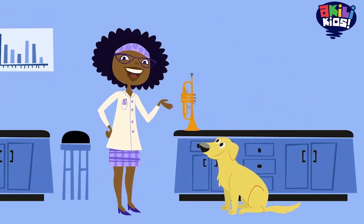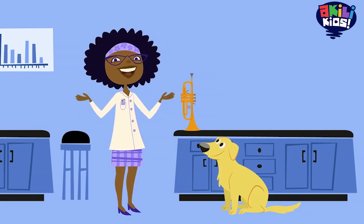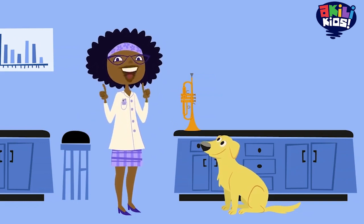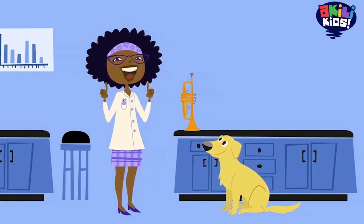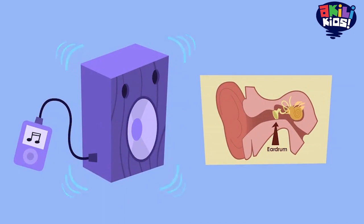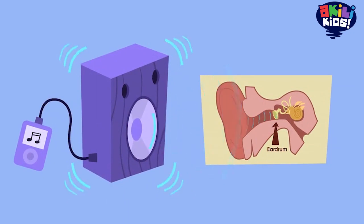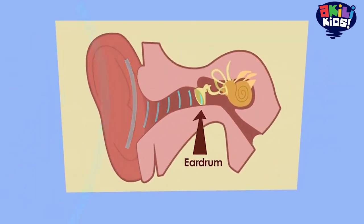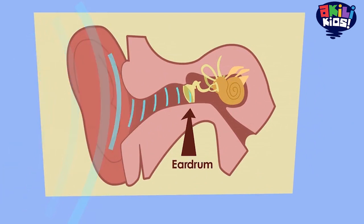In order to make a sound, an object has to move back and forth. We call that back-and-forth motion vibration. When something vibrates, it makes the air vibrate, and that vibration moves through the air from the object to our ears. The vibrating air makes the eardrum inside our ears vibrate. That's how we hear the sound.